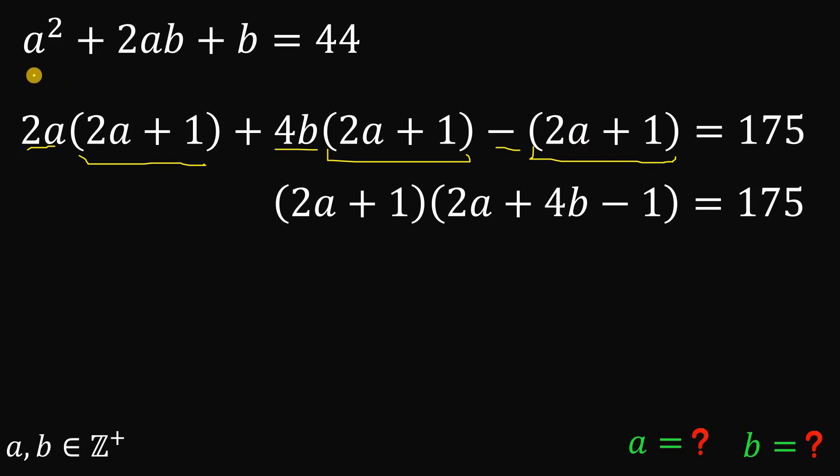So we factored this entire equation. This is very nice because if a and b are both positive integers, we can say that 2a plus 1 is definitely less than this expression 2a plus 4b minus 1. And the only problem here is the factored form of 175. 175 is 25 times 7 or 5 squared times 7. So 175, we can say that this is equivalent to 1 times 175 or 5 times 35 or 7 times 25. In short, we only have three possible cases for this scenario.